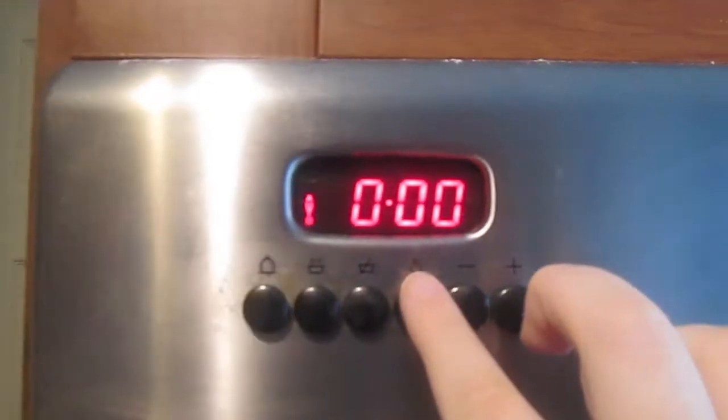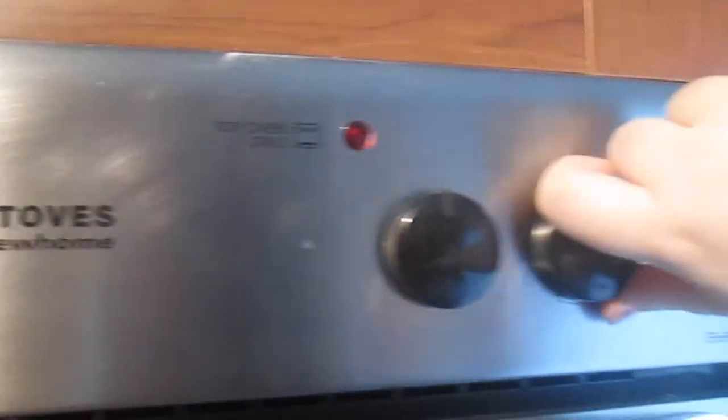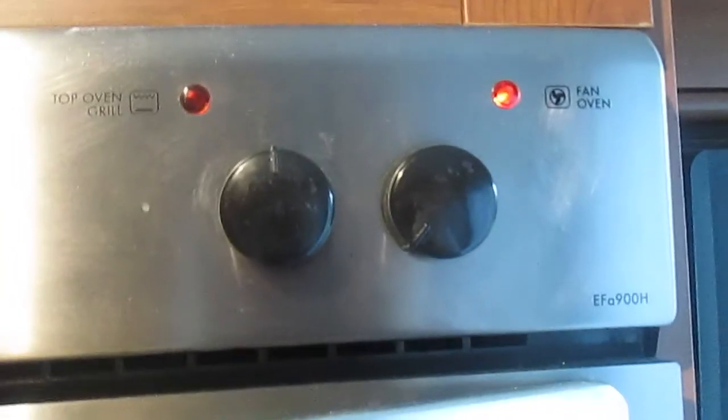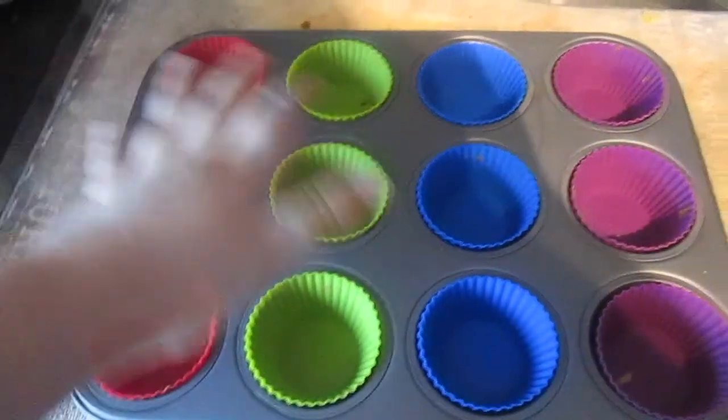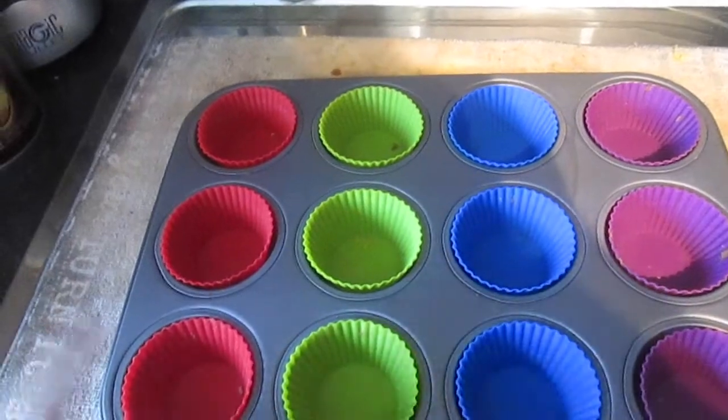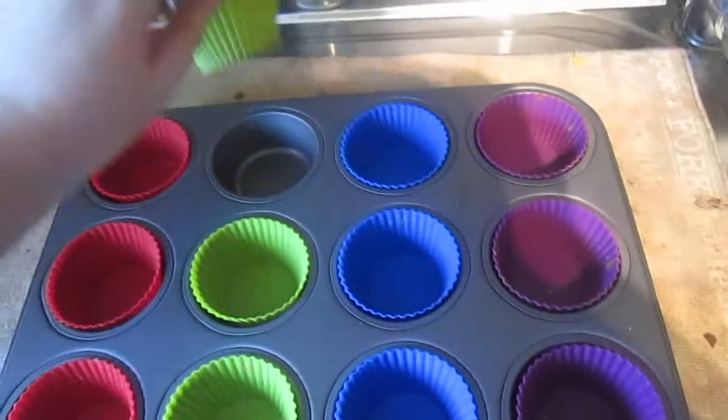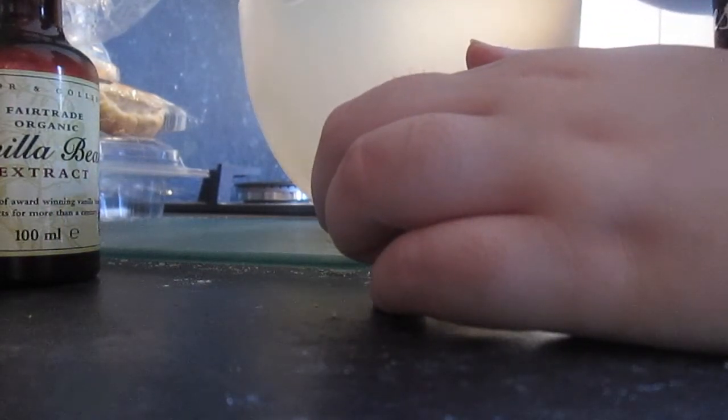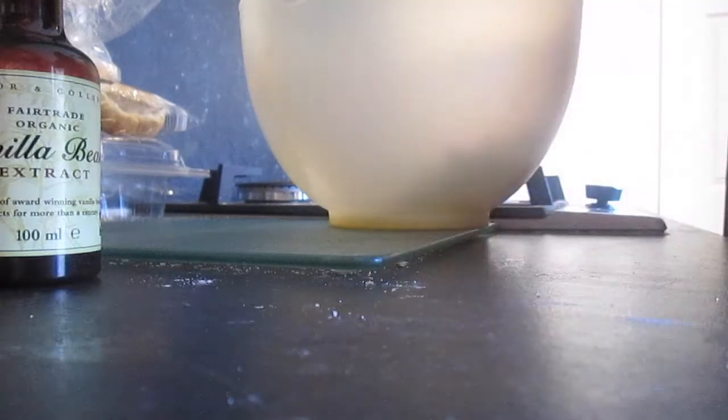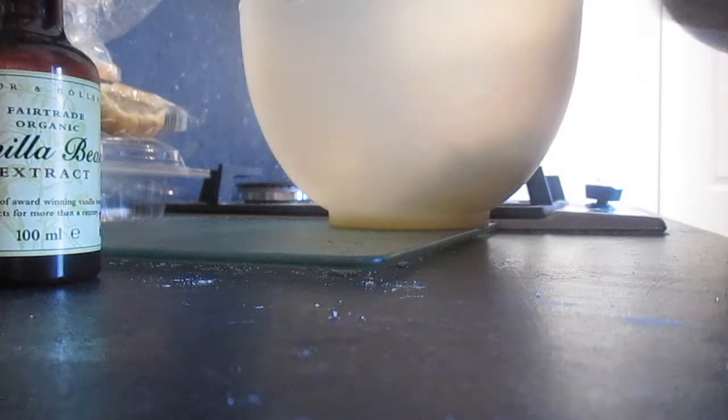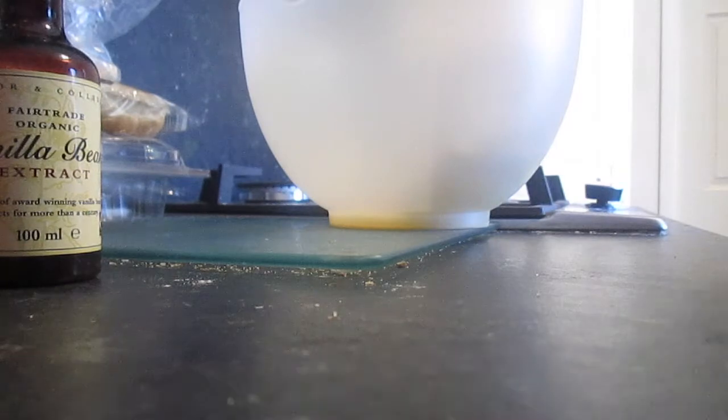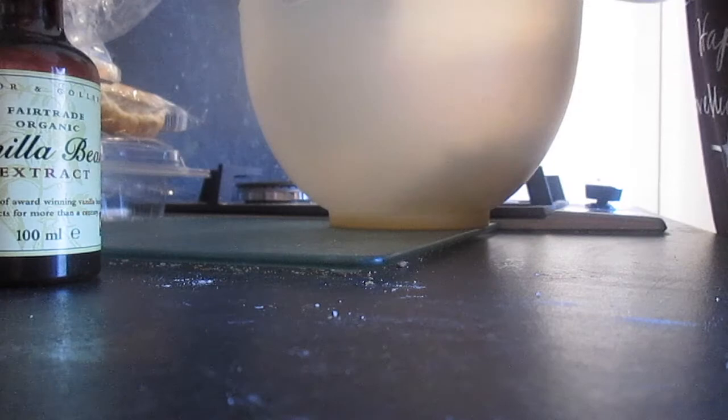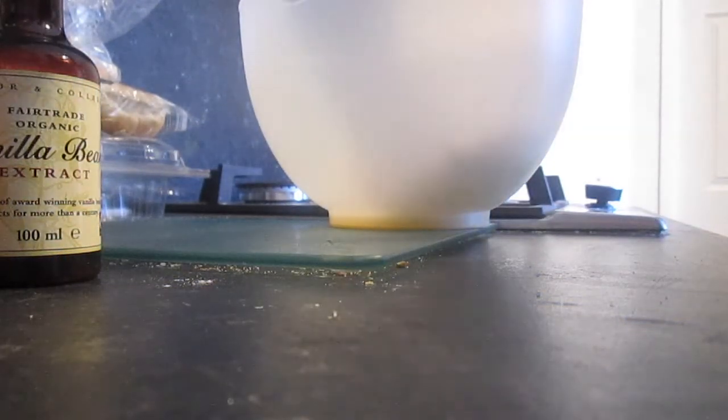So the first thing that you are going to want to do is preheat your oven to 160, 170, 180 degrees. And then you want to put all of your cupcake cases into the holes. And then the next thing we're going to want to do is put all of your ingredients into the bowl. So I'm going to start off with the butter and the sugar just so I can make it light and fluffy before adding all the other ingredients in.